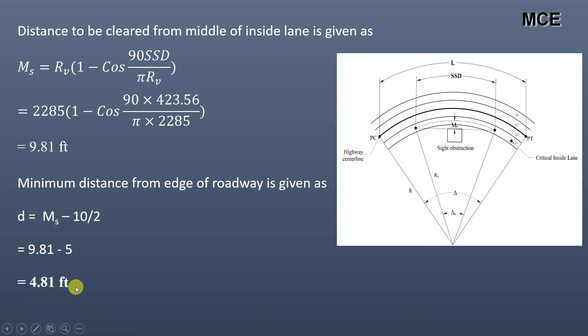This value gives us the distance that we have to clear from the edge of the roadway so that the adequate stopping sight distance is available along the centerline of the highway. So this gives us the procedure for how we can calculate the middle ordinate of a horizontal curve.